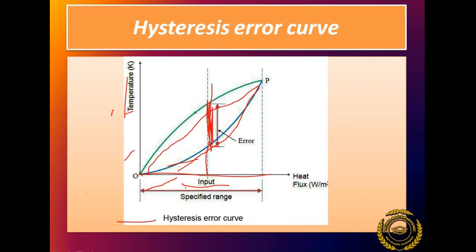This is the hysteresis error curve. It has deviated from its path — there is a deviation — and that is called the hysteresis error curve. So the hysteresis error curve should now be clear to you.